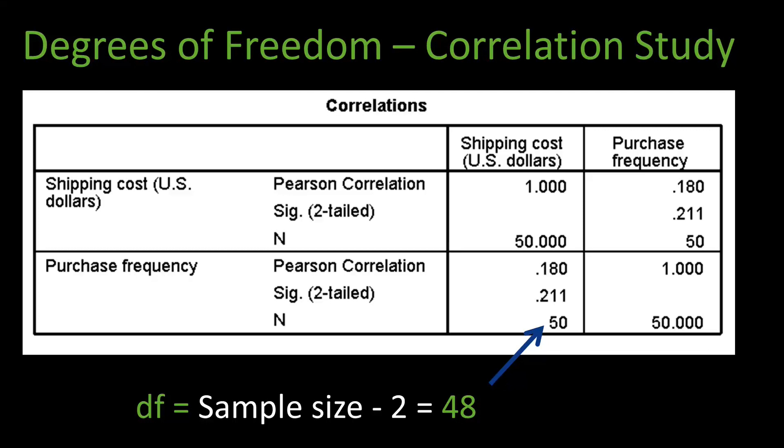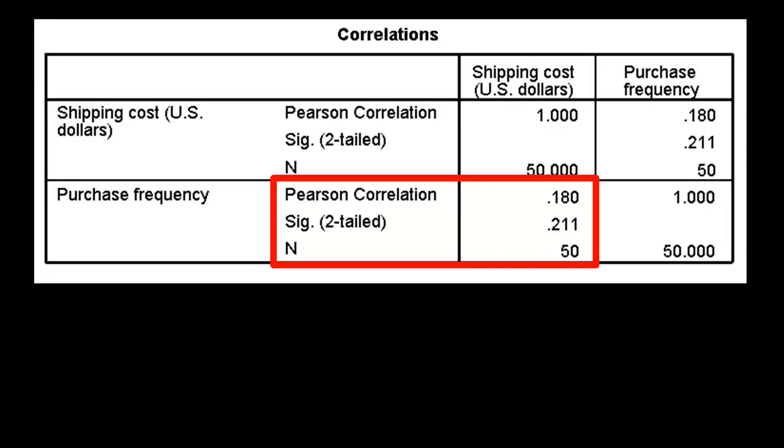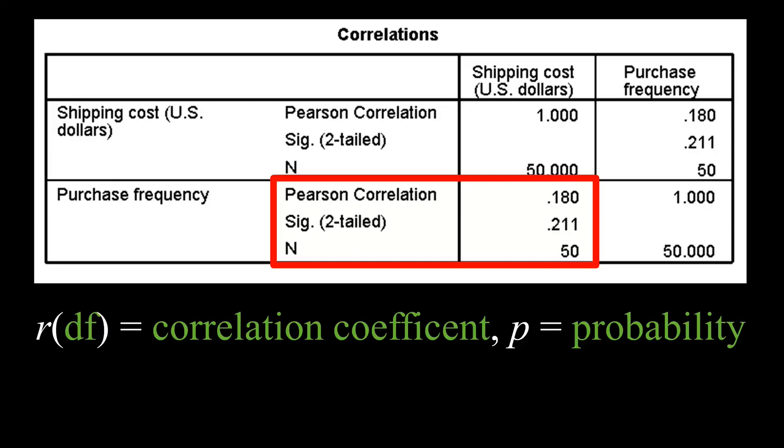As shown here, the degrees of freedom are equal to the sample size minus 2. Since the sample size in this situation was 50, we have 48 degrees of freedom. When writing your results, use this format. Just insert the results from your output.